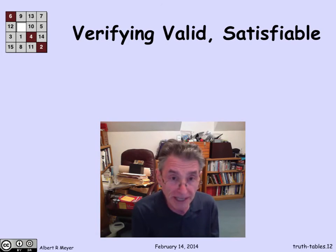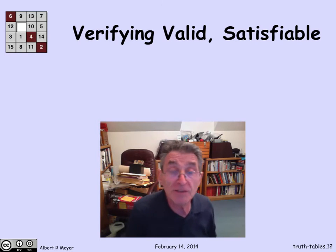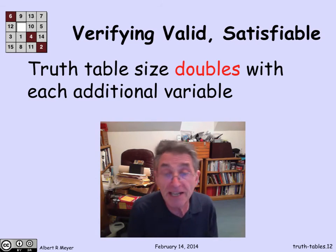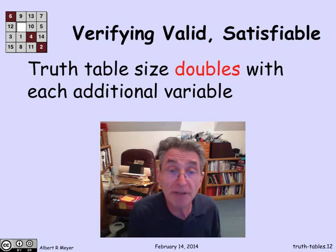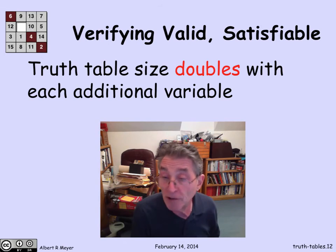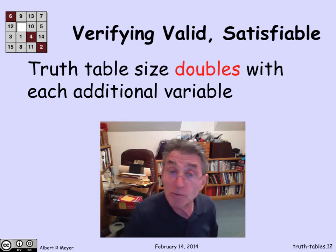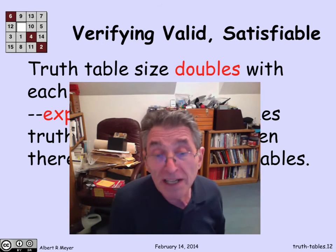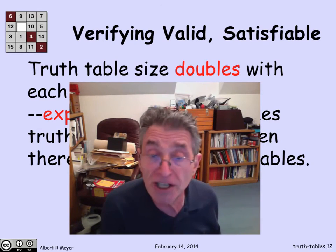A very important problem that comes up in multiple ways is checking whether a formula is valid or satisfiable. The truth table approach tells you directly: try every possible environment and see whether one yields true for satisfiability. But the problem is that the truth table size doubles with each additional variable — two variables gives four rows, three gives eight, four gives sixteen. This exponential growth rapidly gets out of hand once the number of variables grows moderate. With hundreds of variables, truth tables are simply out of the question.